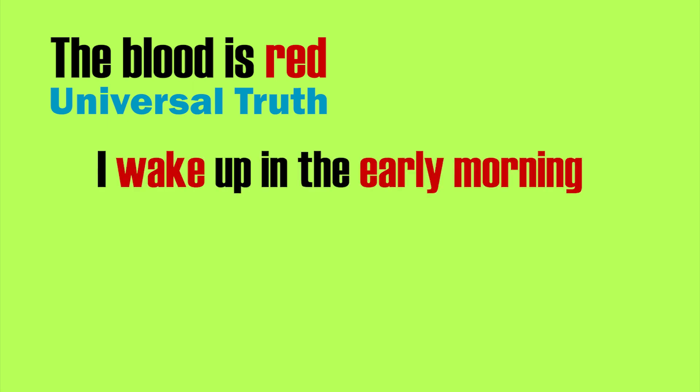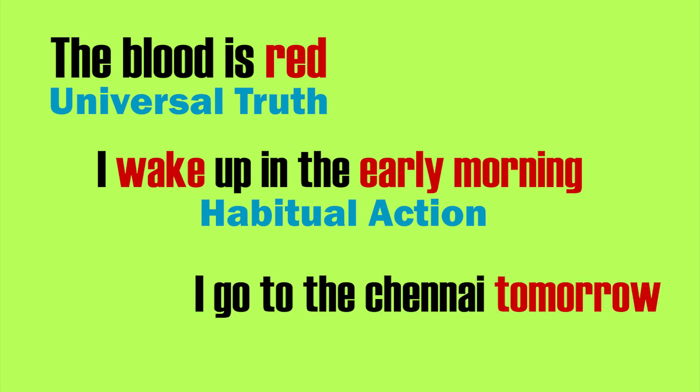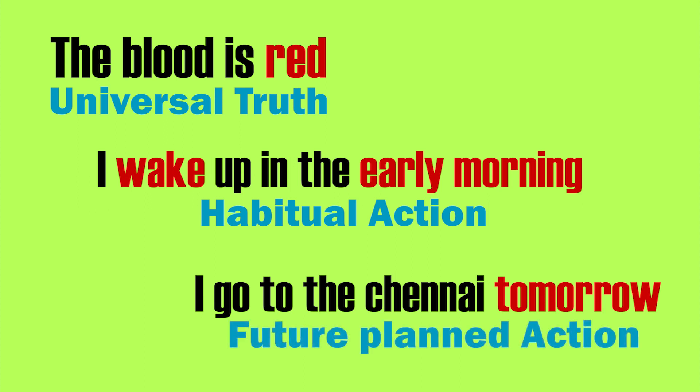Here are some examples for simple present tense. Example 1: 'The blood is red.' It is an example for universal truth. Example 2: 'I wake up in the early morning.' It is an example for habitual action. Example 3: 'I go to Chennai tomorrow.' It is an example for future planned action.